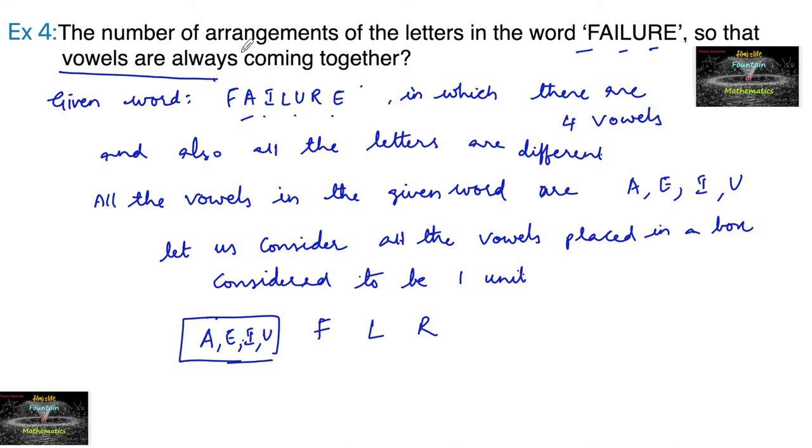Now in our arrangements, the vowels to be together means let us keep this box in such a way that always this box containing vowels will be together, and the remaining F, L, R. Now total how many boxes are there? So one, two, three, four - like four spaces.